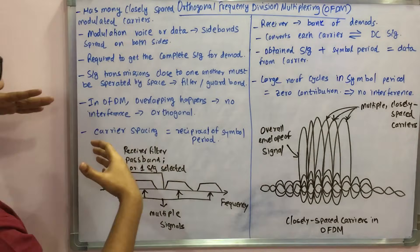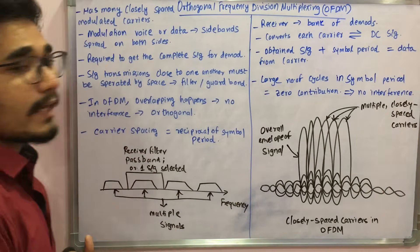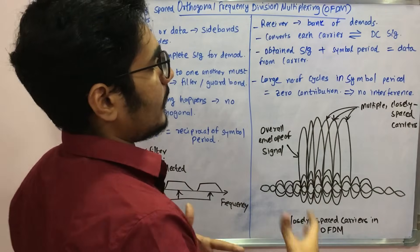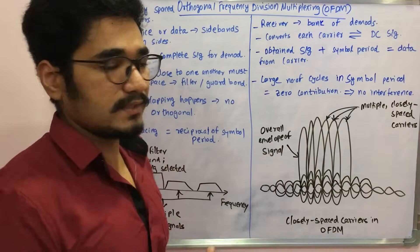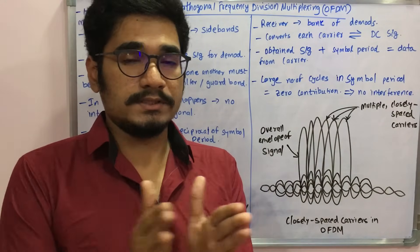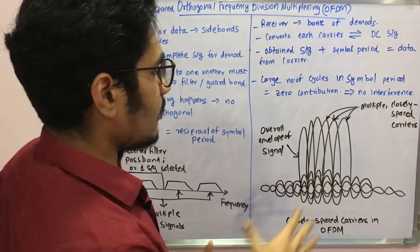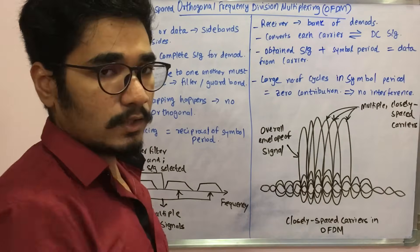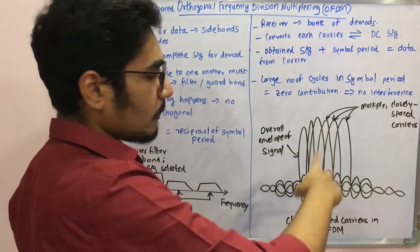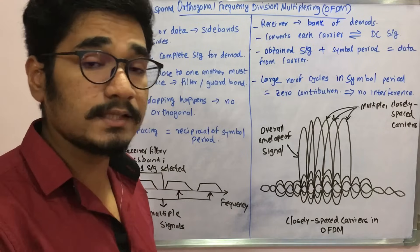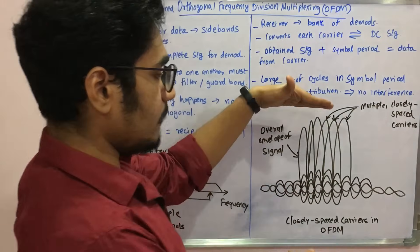As mentioned, the carrier spacing must be equal to the reciprocal of the symbol period. This is required so that there is a large number of cycles within the symbol period. If that condition is met, there would be zero contribution from interfering signals — no jamming — and therefore absolutely no interference. We can see this from the diagram, which shows the closely spaced carriers in OFDM and the overlapping of various signals, which could be either data or voice.